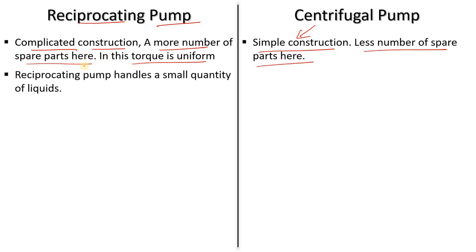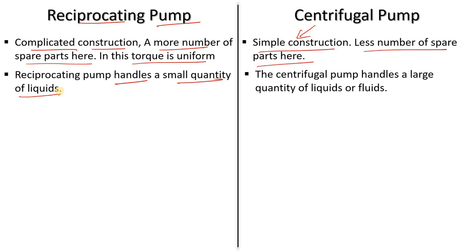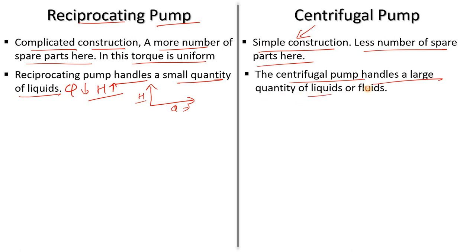The reciprocating pump handles a small quantity of liquid. It is favorable where small flow rate (Q) and high head are required, because compressing the system raises pressure very fast. That's why it is called a high head pump and constant flow pump. The centrifugal pump handles a large quantity of fluid, which is why it is called a high volume pump.